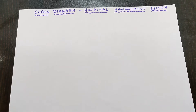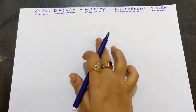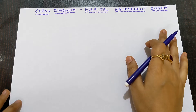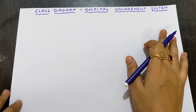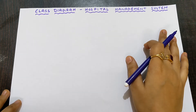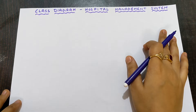In this video, we are going to learn how to draw the class diagram for hospital management system. The first step is to select the classes you are going to draw related to hospital management. You are supposed to draw at least four to five classes in a class diagram.